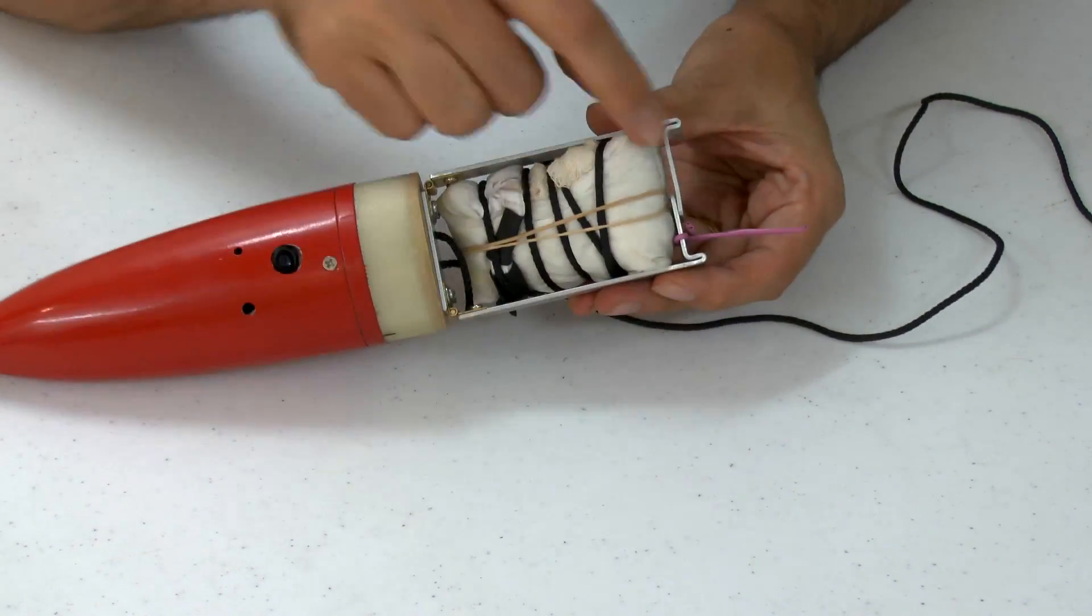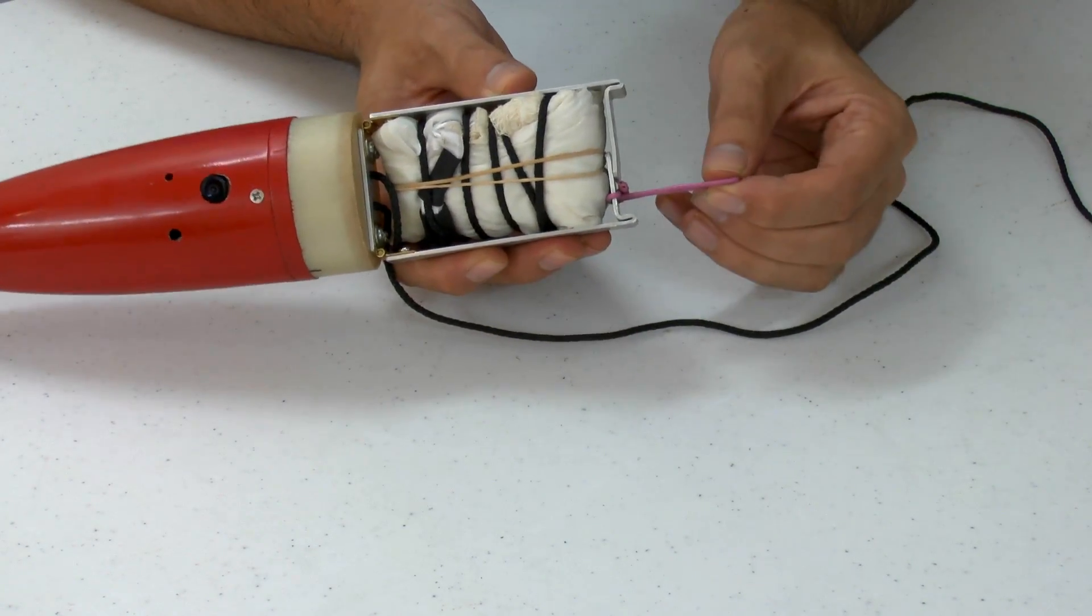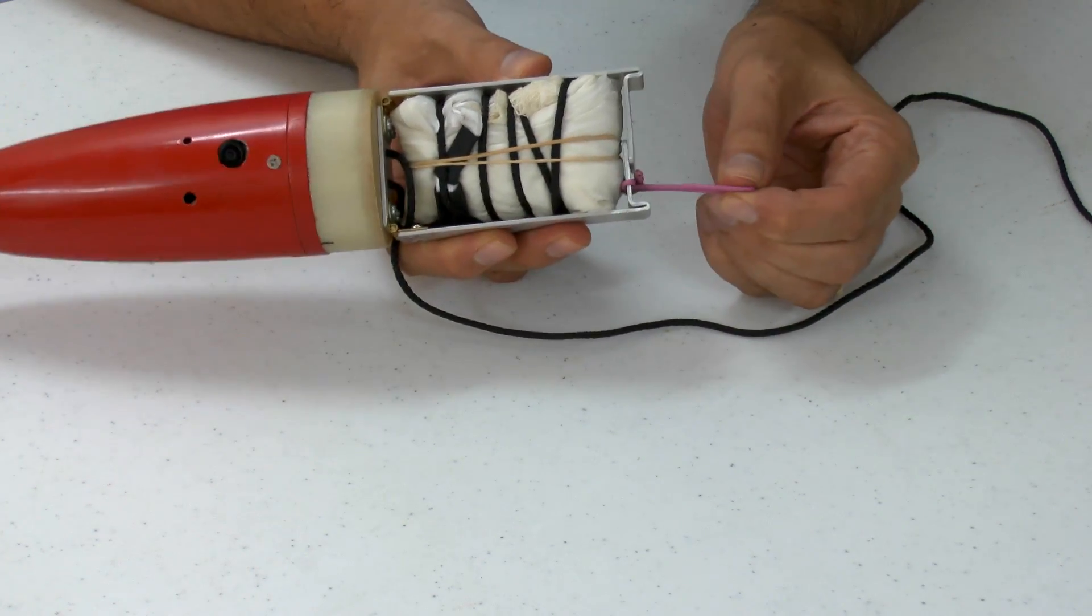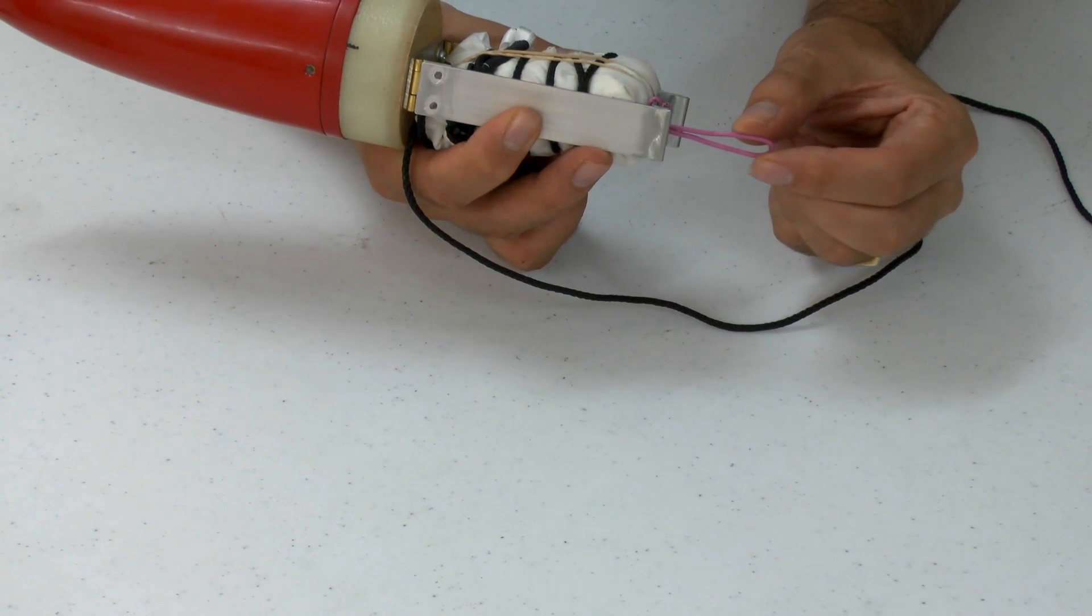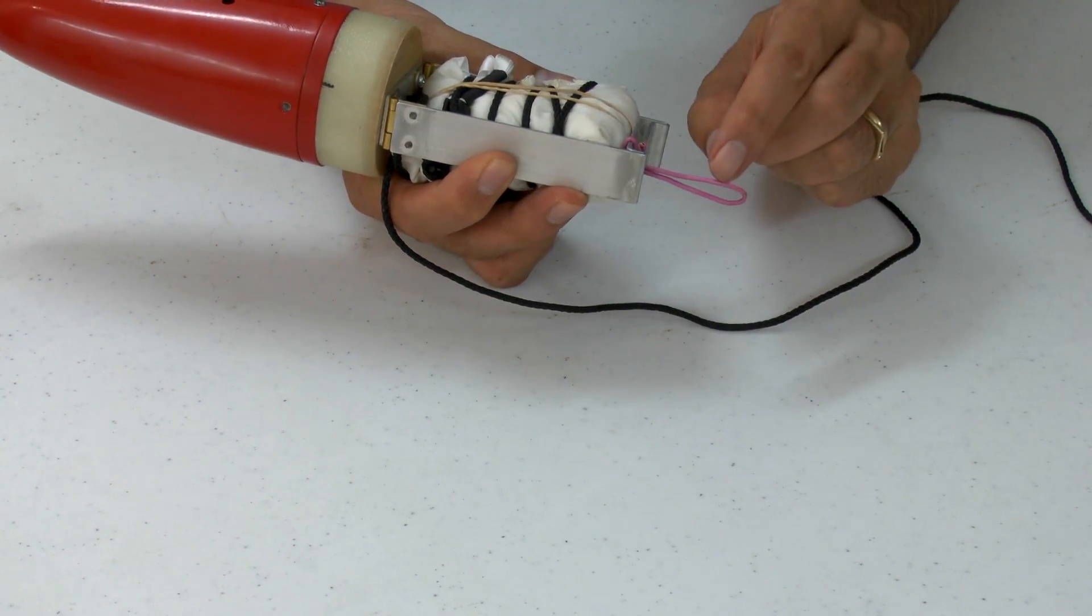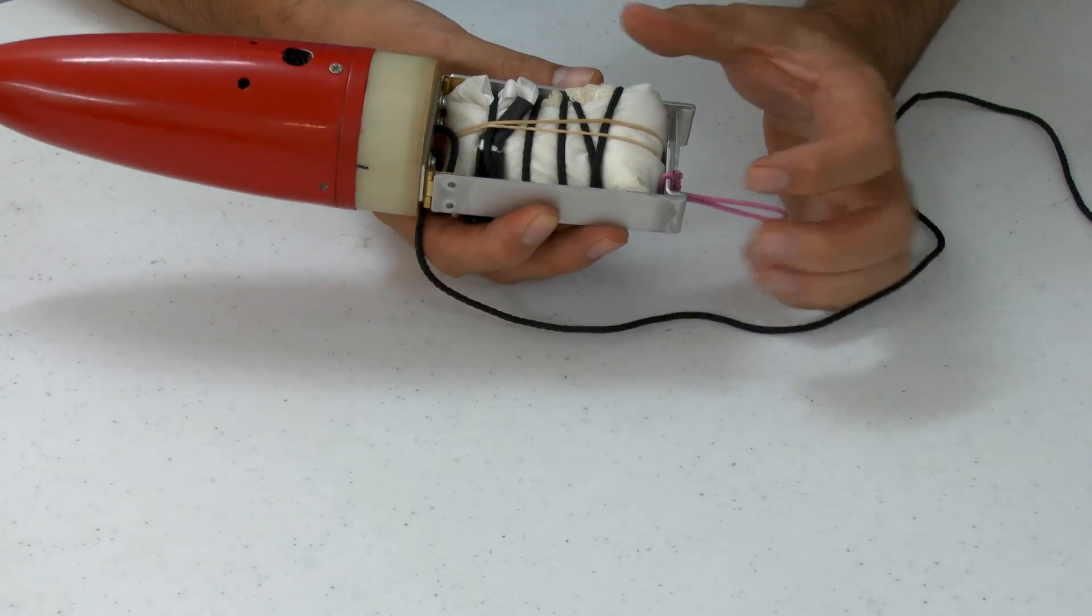Now you'll notice that they overlap, that's so that we only need one attachment point. So when this pulls, that also holds this one in place. This wire loop just simply hooks around the servo horn, which keeps the whole thing in place.